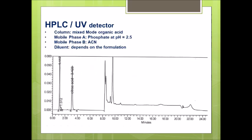Now I'm going to move to the HPLC method. The chromatogram that we see is generated using a mixed mode organic acid column. The mobile phase A is phosphate at pH 2.5 and mobile phase B is acetonitrile. The diluent depends on your formulation.